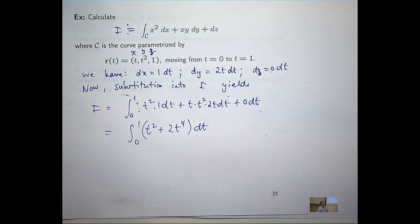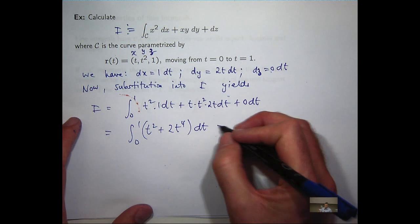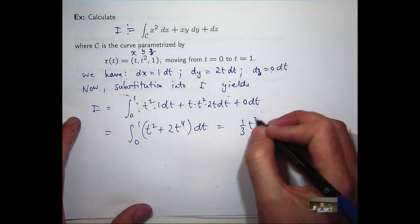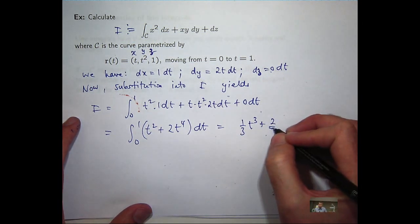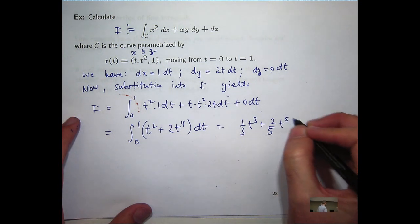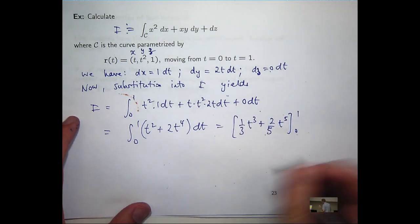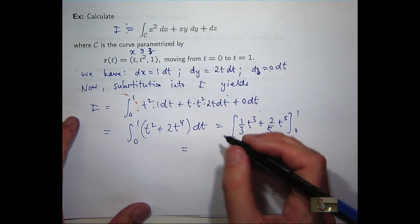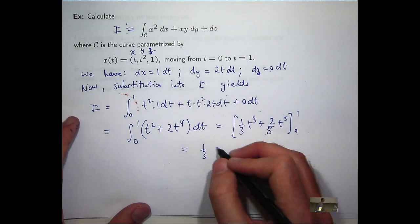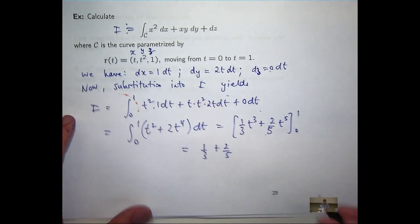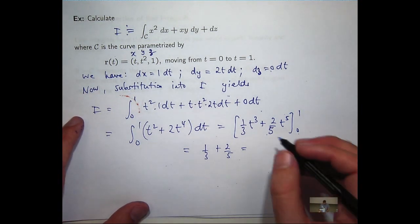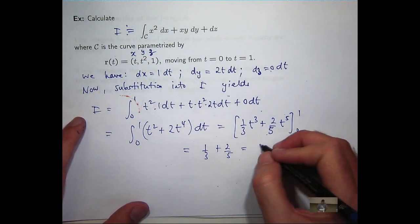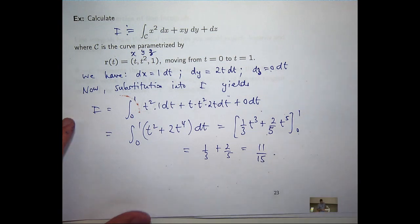Now I just need to integrate this and evaluate. When I sub in 0, this isn't going to change anything. When I sub in 1, I'm going to get something like this. I'll put them over a common factor of 15. I should get that.